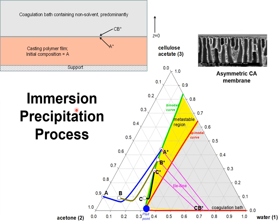With increasing contact times, the compositions in the casting polymer film will get progressively richer in water, and the composition trajectories during equilibration will get closer to the binodal curve.